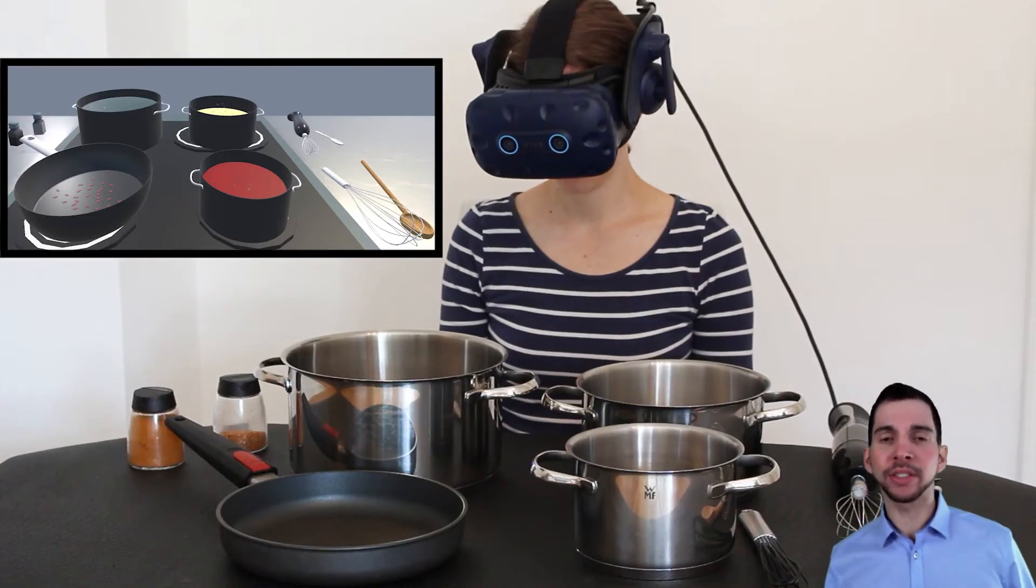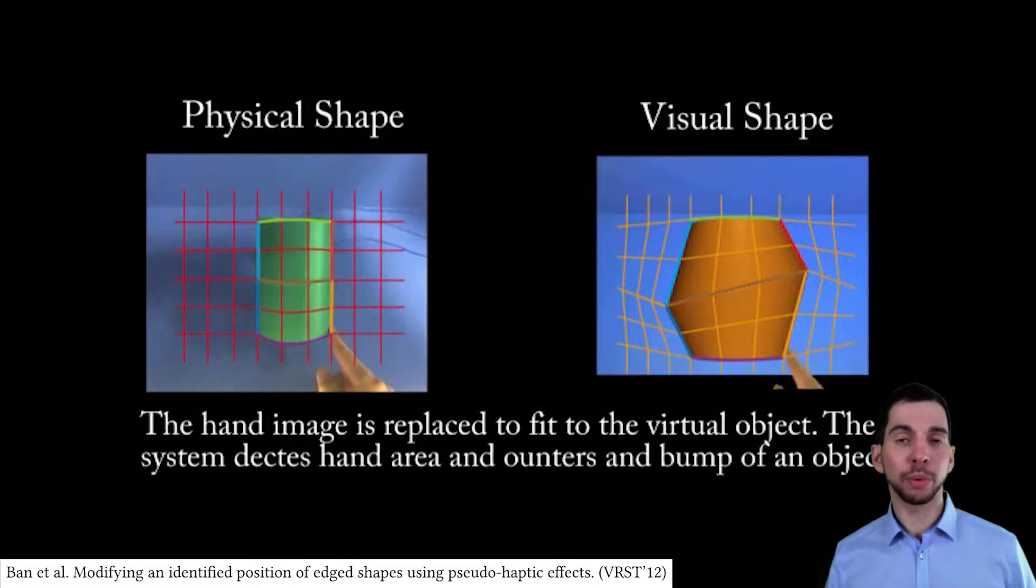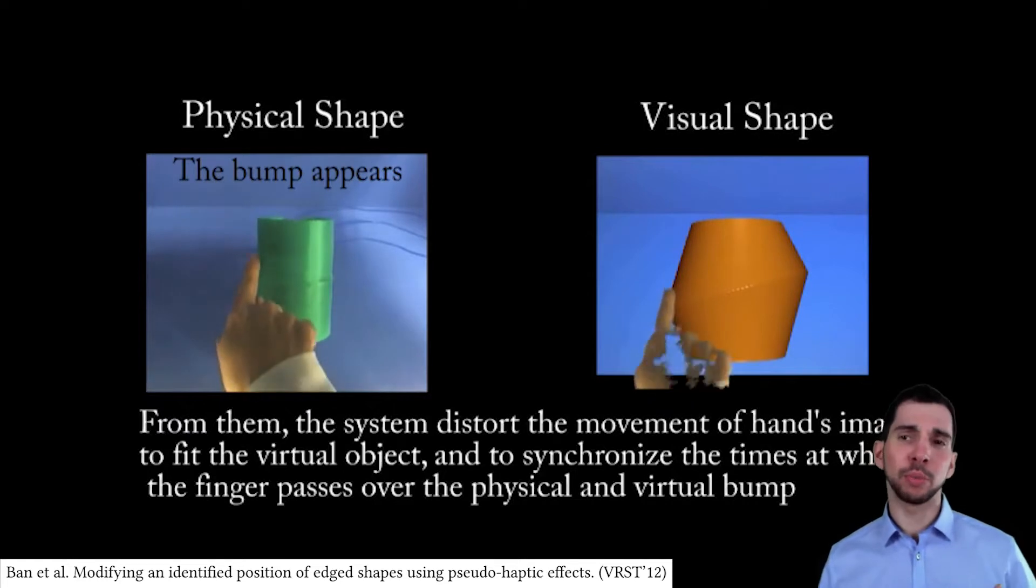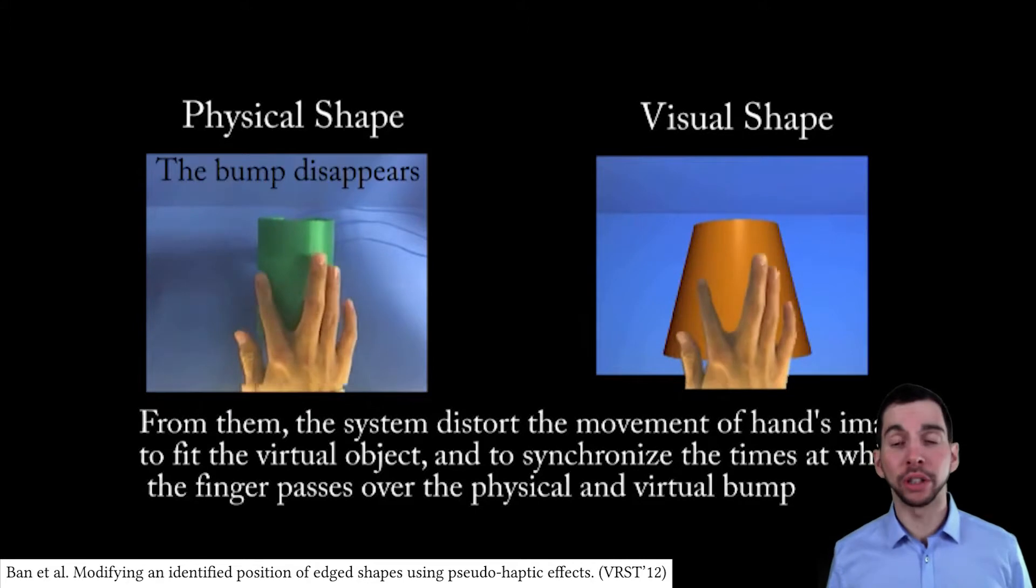To overcome this, researchers propose the use of visuo-haptic illusions, allowing a single physical proxy to act as a stand-in for various virtual models. For example, Banaeal offset the position of the virtual hand from the position of the real hand, creating the illusion of touching different 3D geometries. This allows them to reuse the same physical proxy, the cylinder on the left-hand side, for various virtual models.